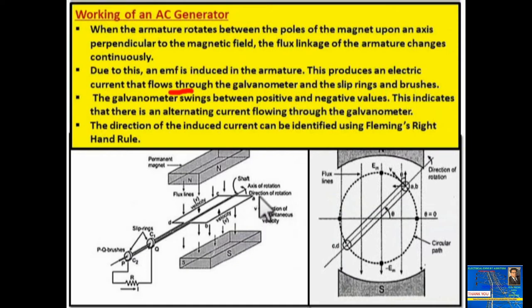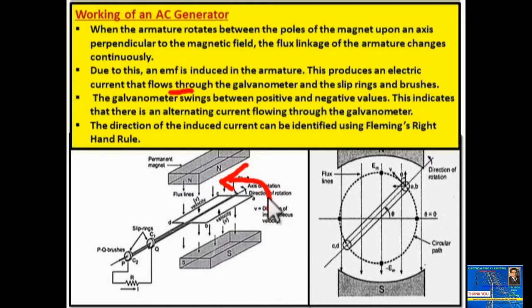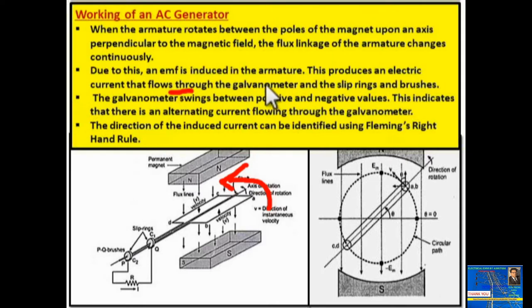Whenever this rectangular coil is rotated — here we have taken anti-clockwise direction — it is moved between the uniform magnetic field. According to Faraday's law of electromagnetic induction, there will be flux linkages in the coil and there will be an induced EMF in the armature or coil.